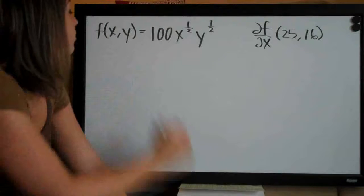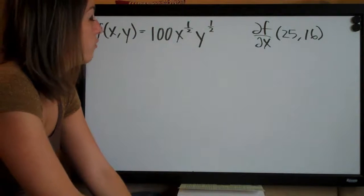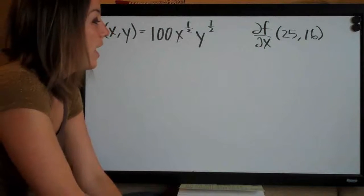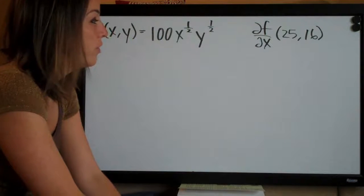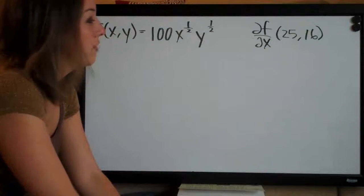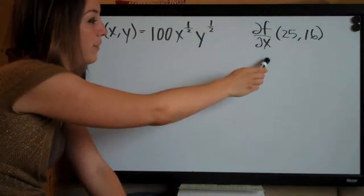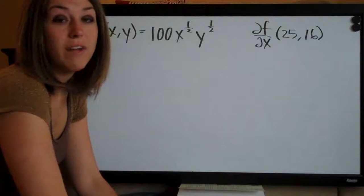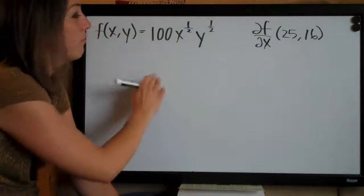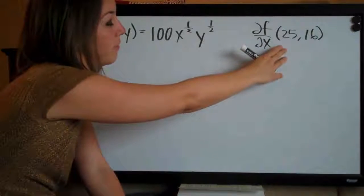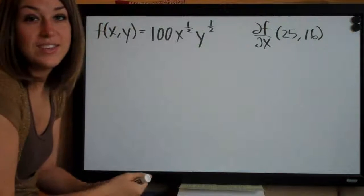This one is the function f of x, y equals 100 x to the one-half, y to the one-half. And they've asked us to compute the first order partial derivative of f with respect to x at the point (25,16), which means that we're going to take the partial derivative with respect to x and then plug in the point (25,16) and see what we get.